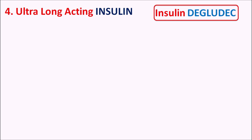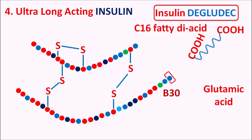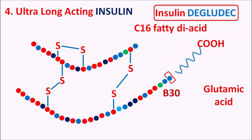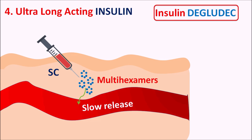The fourth category is ultra-long-acting insulin: insulin degludec. In its structure, the terminal amino acid is replaced by glutamic acid, which acts as a spacer to bind a C16 fatty diacid via an amide linkage. When given subcutaneously, degludec forms multi-hexamers that are slowly released, producing an ultra-long duration of action.